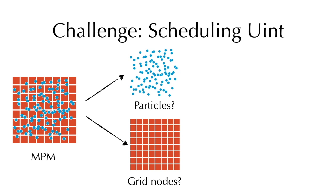For example, we cannot use a single particle or grid as a scheduling unit because it will be very slow.